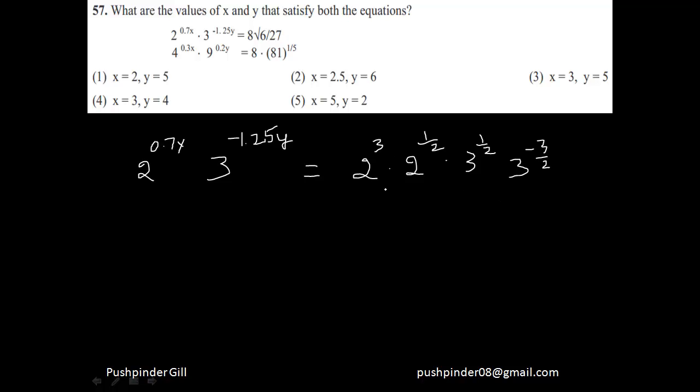So this is the whole crux of 8 into root 6 by 27. If you try to add up all the powers, you get 2 to the power 7/2 into 3 to the power negative 5/2.